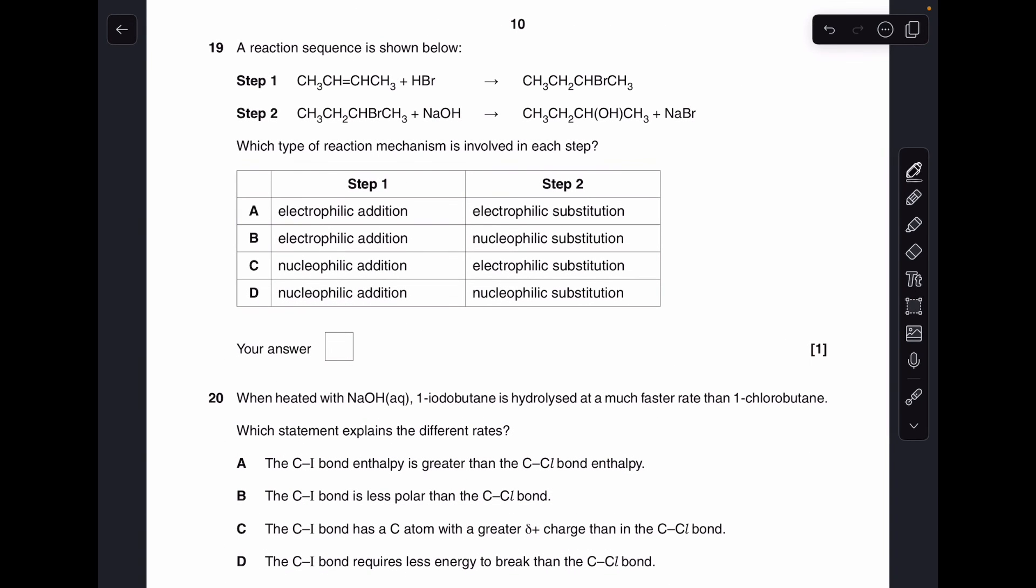19 is testing our knowledge of reaction mechanism types. So step one, we've got an alkene reactant there. So that's electrophilic addition. And step two, we've got a haloalkane there. So that's nucleophilic substitution. So B is the answer.